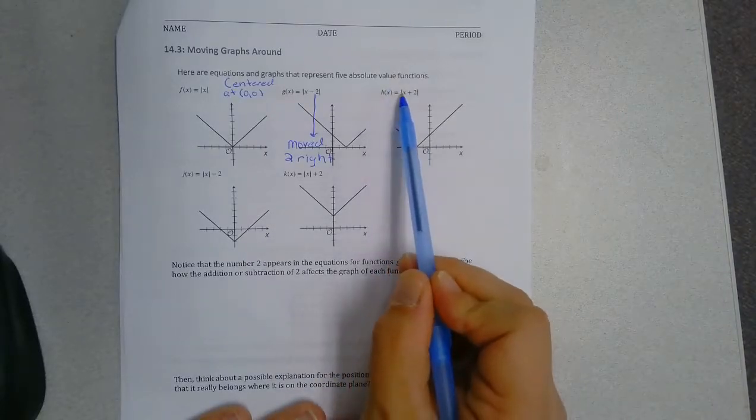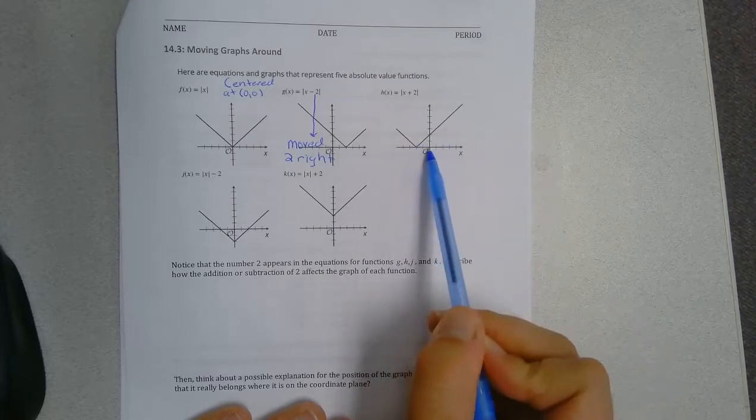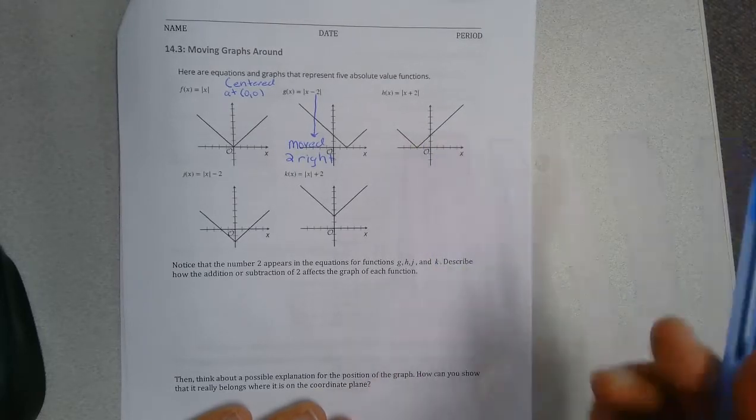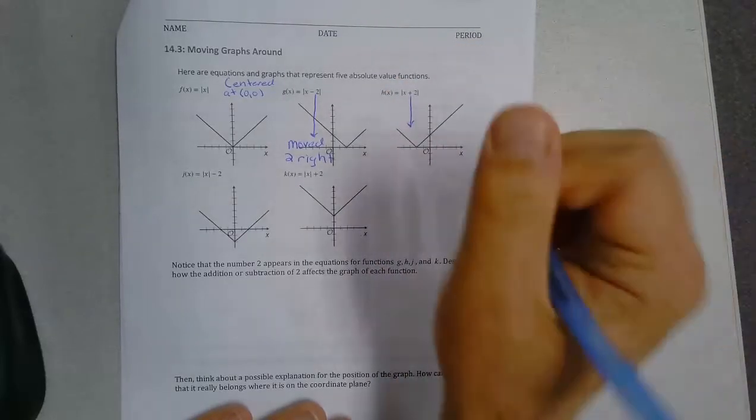Now, something else is interesting. If I did the absolute value of x plus 2, look at that. From 0, 0, I moved two spots to the left. It's quite an interesting pattern there.